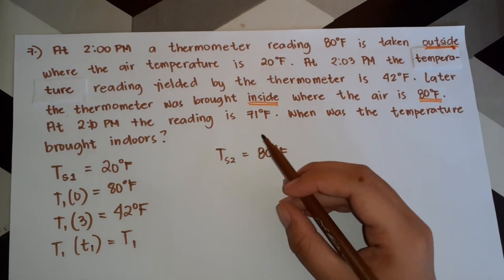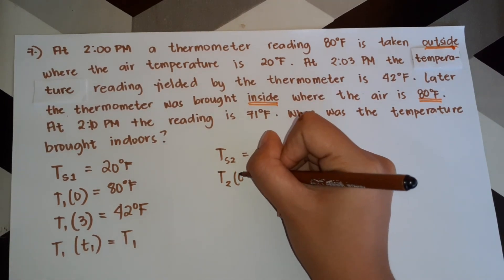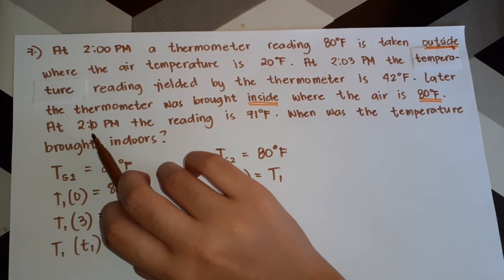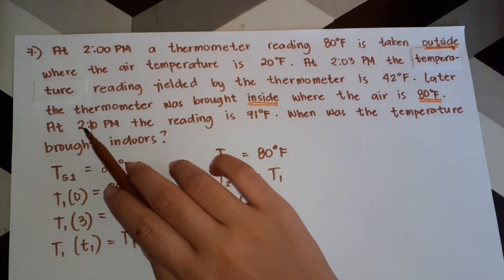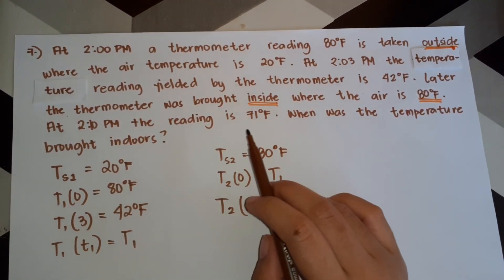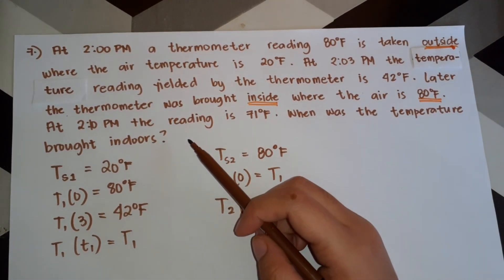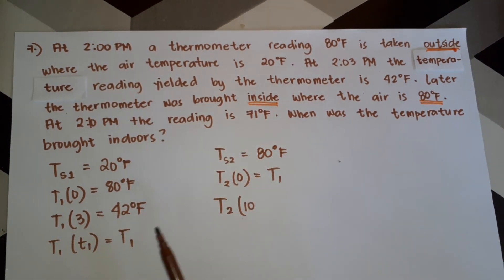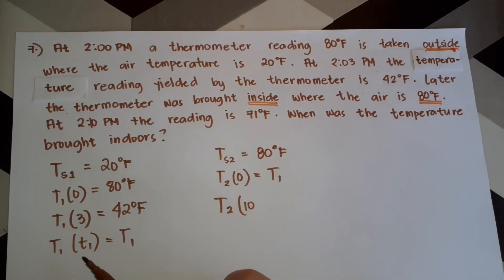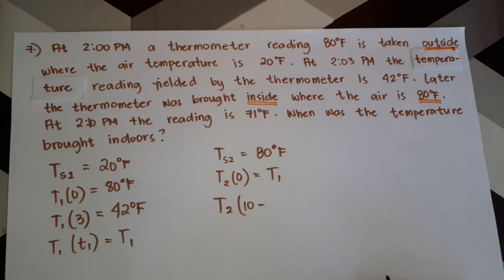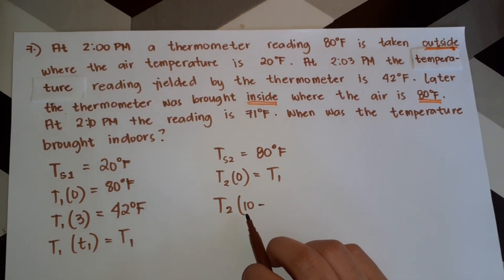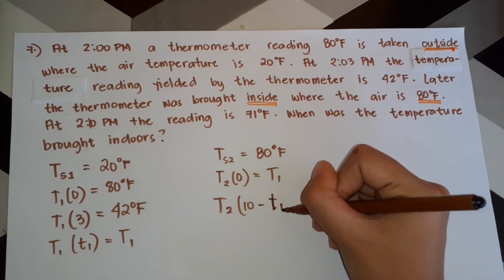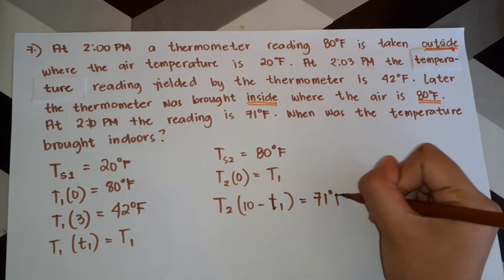The time zero for the second environment is equal to T1, the moment the thermometer was brought indoors. At 2:10 PM — which is 10 minutes after the original time zero — the reading is 71 degrees Fahrenheit. Since we have not yet found the time when the thermometer was brought indoors, T2 equals 10 minus T1, and the temperature at that point is 71 degrees Fahrenheit.